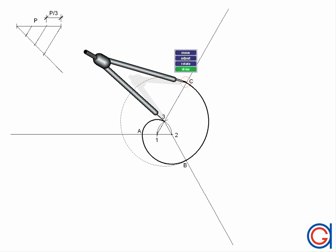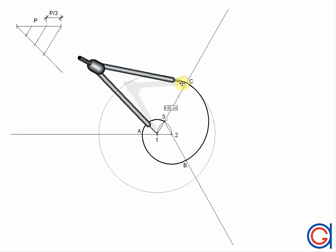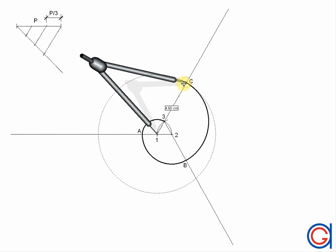Here you can see the spiral forming from three separate circle arcs, and the distance from point three to C is equal to our given length P. Theoretically the spiral can go to infinity, and we will continue drawing it until we fill the screen.